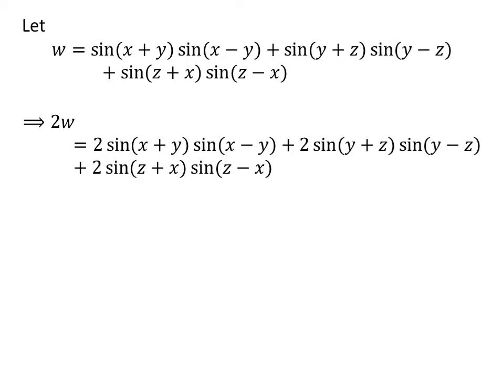Here, I have multiplied both sides of the equation by 2. We know the trigonometric identity cos(A - B) - cos(A + B) = 2 sin(A) sin(B).